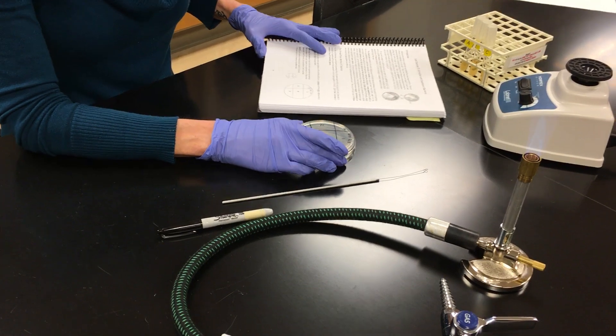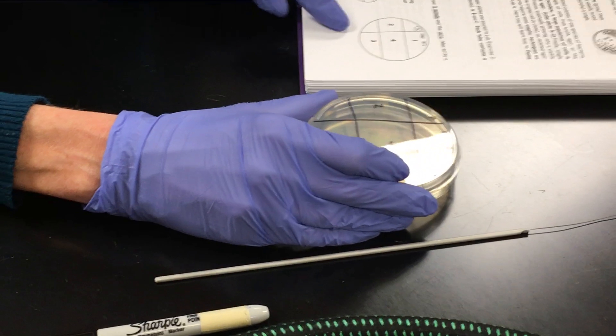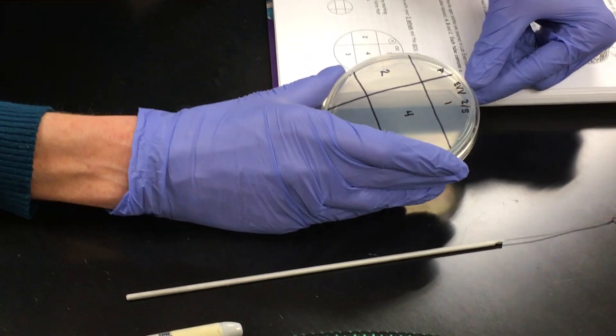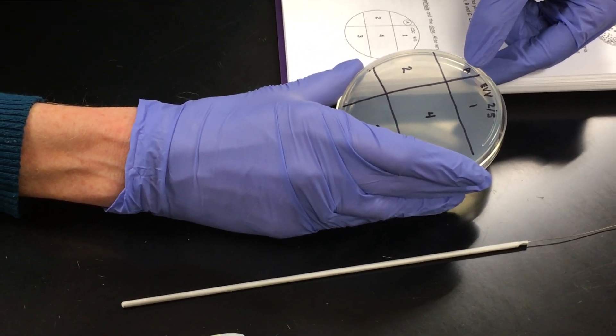So the first thing is we are going to label the bottom of our nutrient agar plate just as it's written in your lab book. So notice I have my initials, I have my date, I'm going to go into culture tube A first, so I've labeled this plate A.